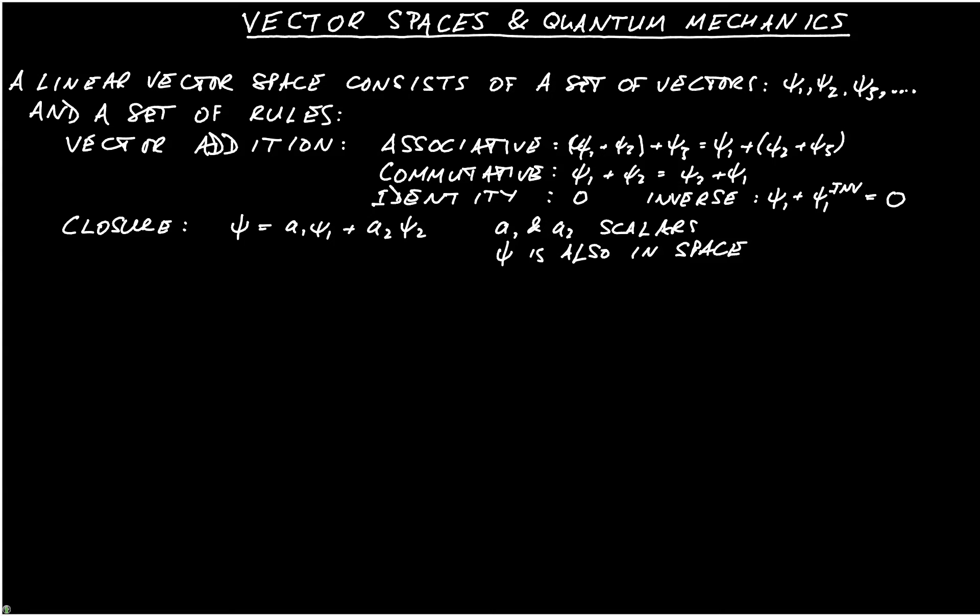In quantum mechanics, we use what's called a Hilbert space, named after the mathematician David Hilbert. This is a vector space with an inner product. And the inner product is defined so that we combine Psi1 and Psi2 to equal some scalar B.